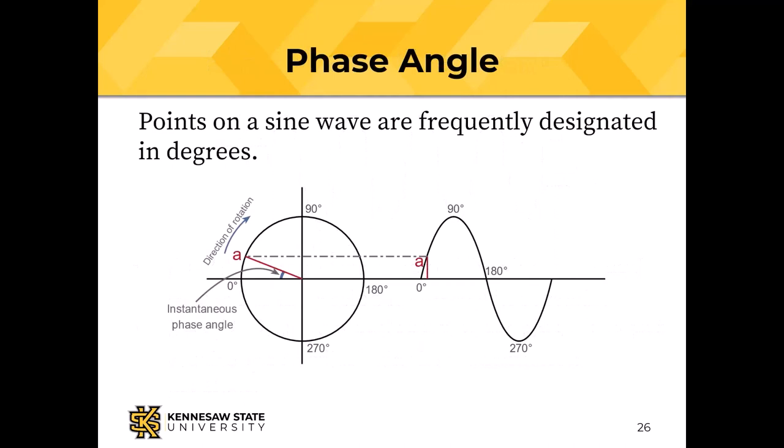If you put chalk on the edge of a bicycle wheel and rolled it along a wall, it would describe a sine wave — up, down, up, down as the chalk goes around. That means we can talk about the phase angle of a sine wave.